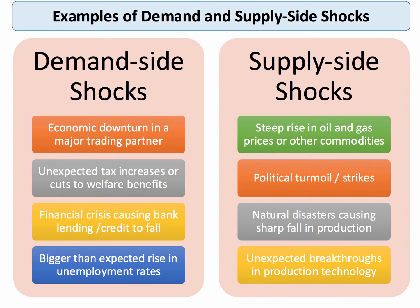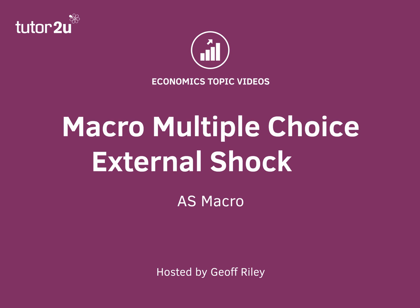Supply side shocks affect costs and the supply capability of businesses at a macro level. Examples include changes in oil and gas prices, changes in the price of many other commodities such as copper, rubber, and cement. Political turmoil and strikes — widespread industrial action — can be a supply side shock, as well as severe climatic changes and natural disasters such as drought, flooding, tsunamis, and earthquakes. Supply side shocks can also be quite positive, particularly when there's an unexpected breakthrough in production technology. Keep in mind that shocks can happen on both the demand and the supply side, and they feature on multiple choice questions.